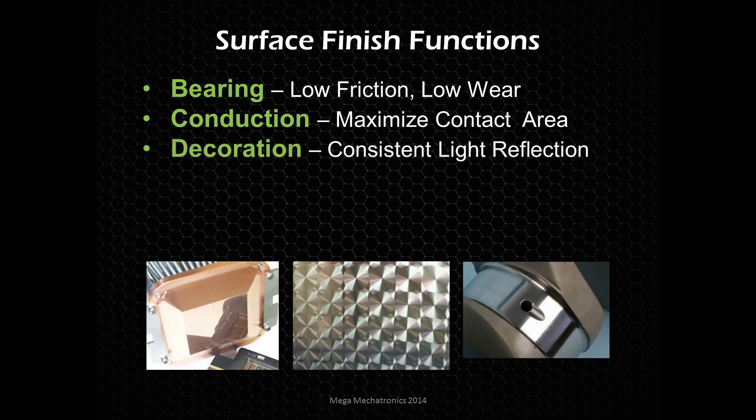And decoration — this is about consistent light reflection. You see here is sort of like a stainless steel finish; you may have seen this in a nice fancy elevator or something in a hotel. But there are other surface finishes, whether it's polished, a shot peen sort of dull look, and things like that. You need to consider this even with non-metal materials — that's very important with plastics and things like that.